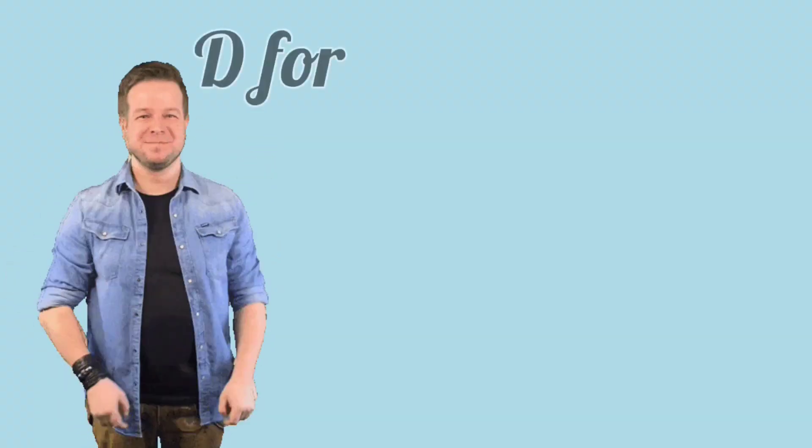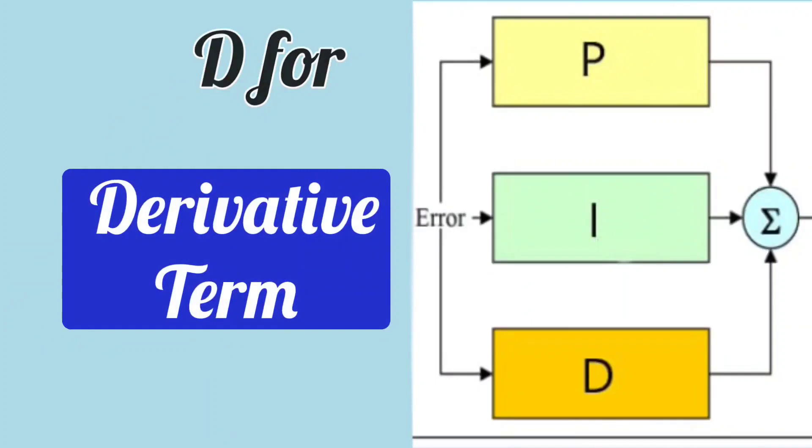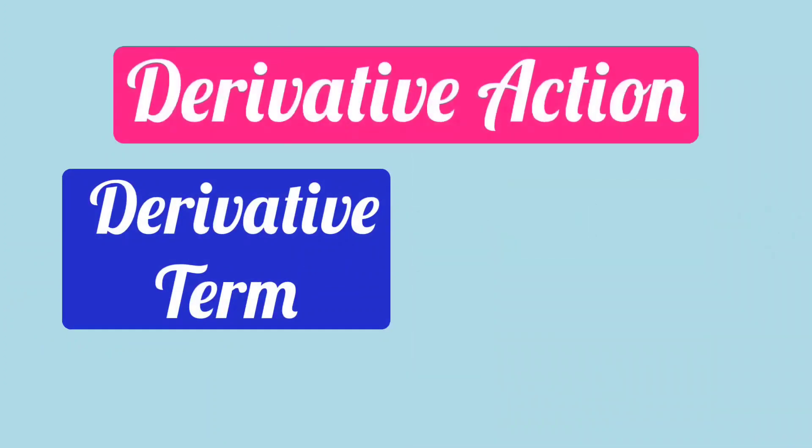So I term is also clear. Now let's understand D for derivative term, derivative term or derivative action.